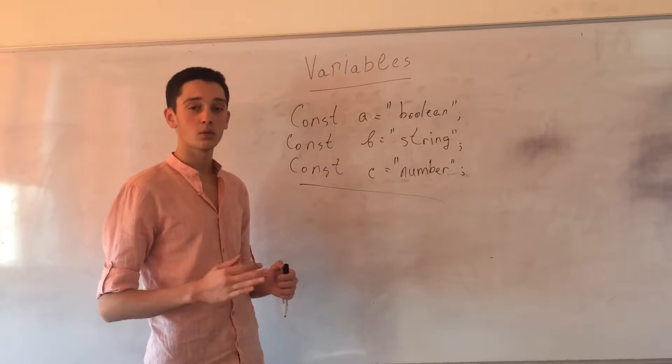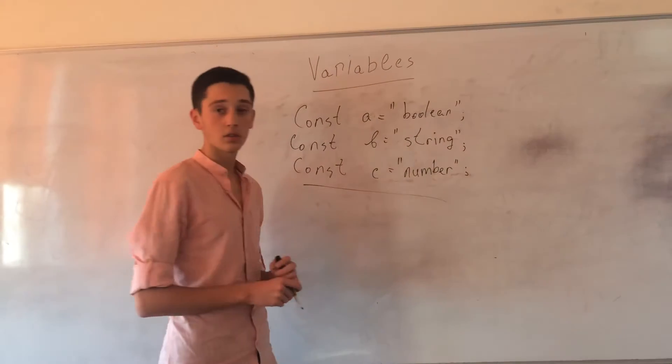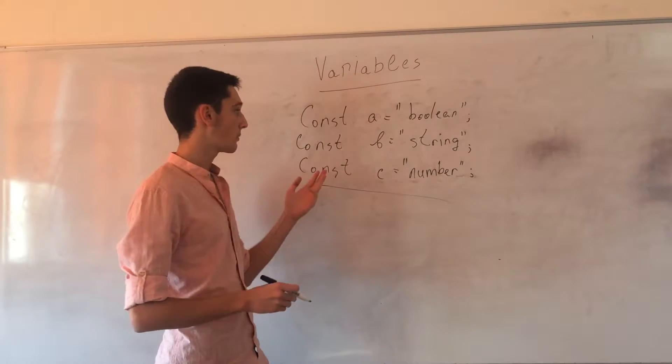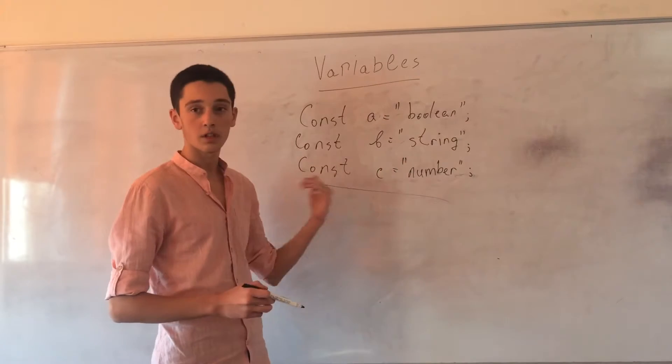We use variables in programming too, like in math. But in programming there are only three types of variables. They can be either boolean operators, string, or numbers.